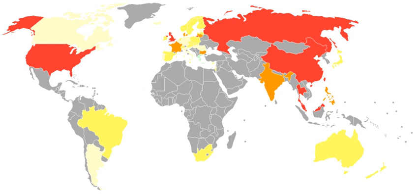The early years in the development of privacy rights began with English common law which protected only the physical interference of life and property. The Castle Doctrine analogizes a person's home to his or her castle, a site that is private and should not be accessible without permission of the owner. The development of tort remedies by the common law is one of the most significant chapters in the history of privacy law. Those rights expanded to include a recognition of man's spiritual nature, of his feelings and his intellect.